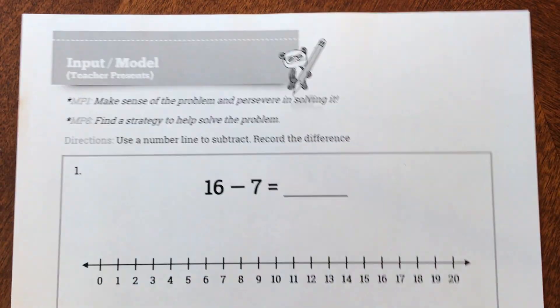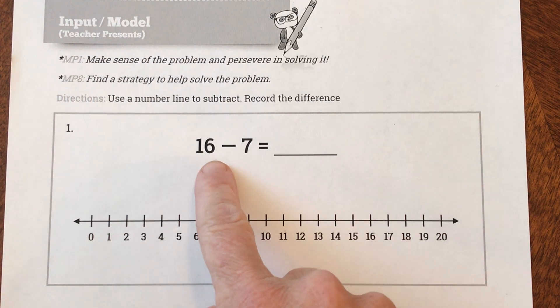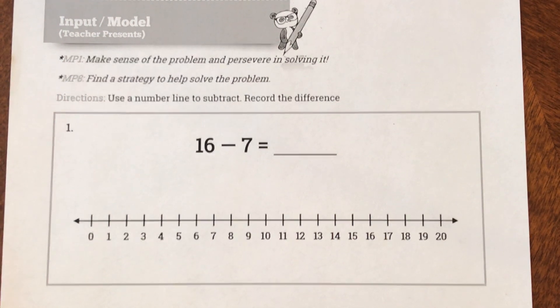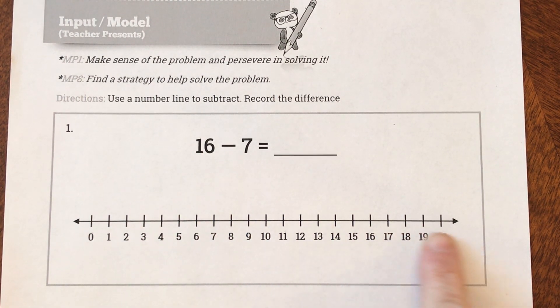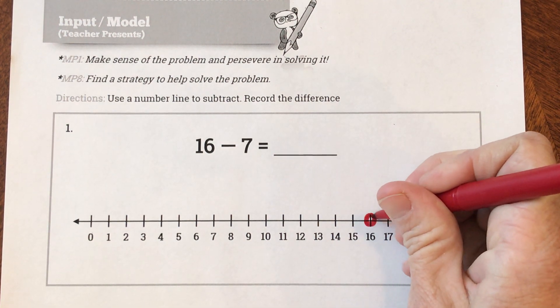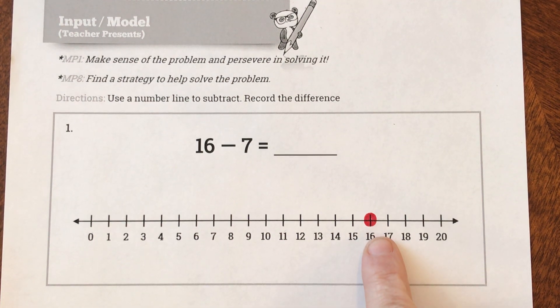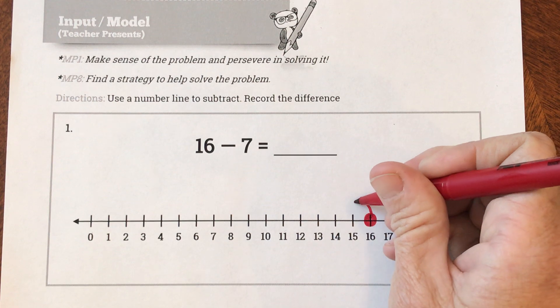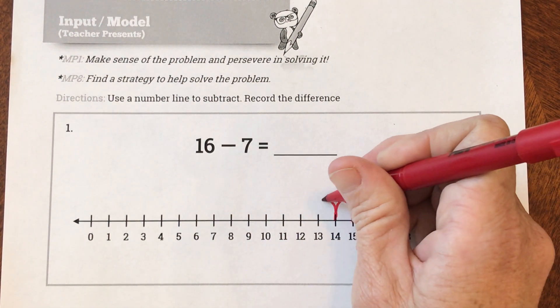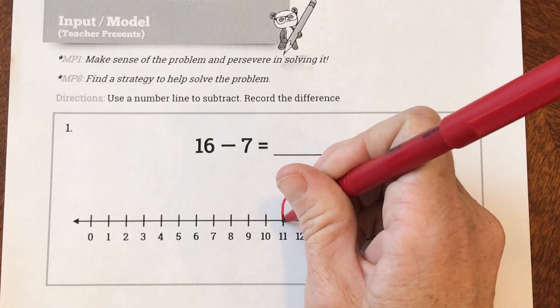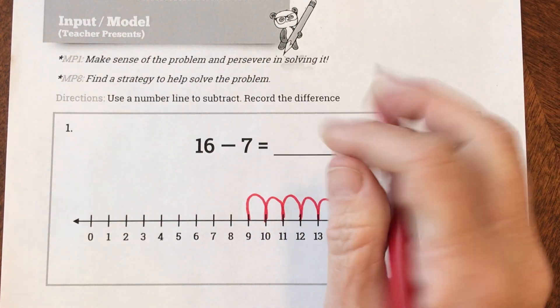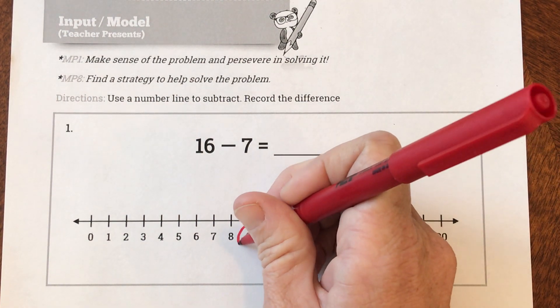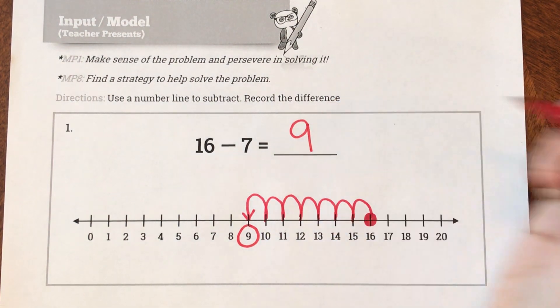So here is my first problem. My first problem says 16 take away or subtract 7. So this is my minuend. My first step says I'm going to find the minuend or my starting number. So my minuend is 16 and 16 is right here. So this is where I'm starting. This is what I have and they want me to count back or subtract 7. So I have to be really careful when I do this. I'm going to go 1, 2, 3, 4, 5, 6, 7 and I counted back 7 because my 7 was my subtrahend and that's where I stopped. That's where I ended up. So what is my difference? My difference is 9.